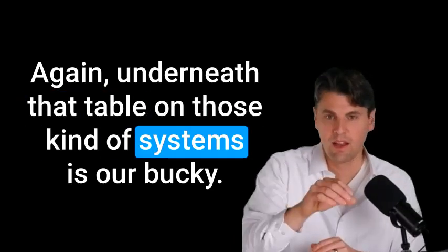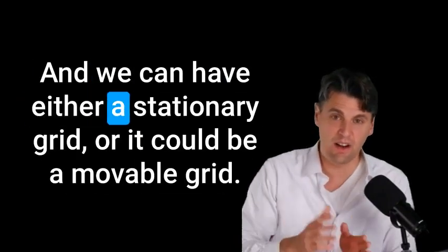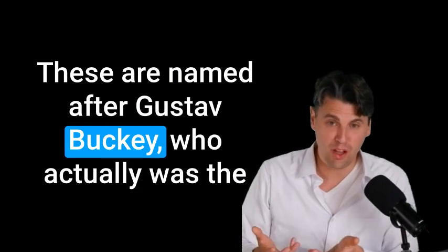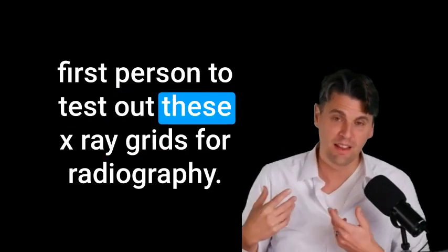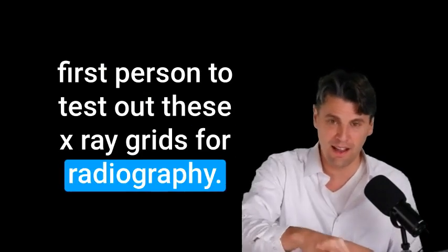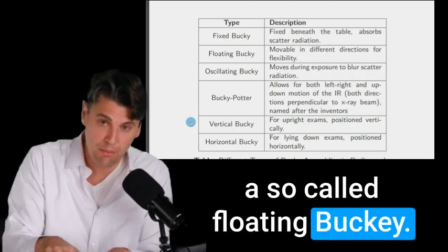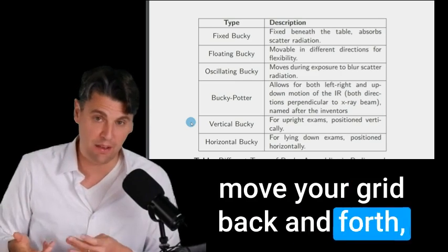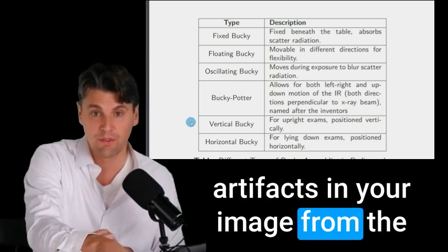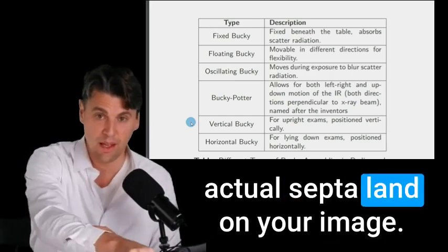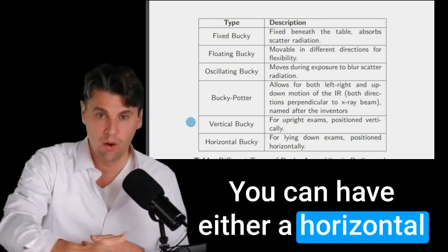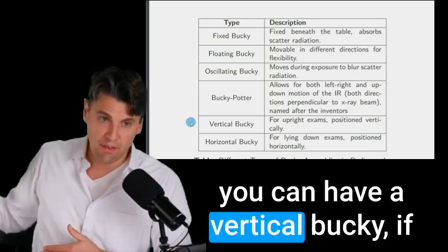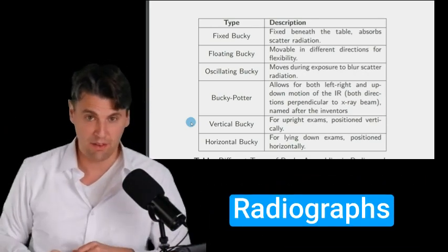Underneath that table on those of systems is our Bucky. And we can have either a stationary grid or it could be a movable grid. These are named after Gustav Bucky, who actually was the first person to test out these x-ray grids for radiography. You can have a fixed Bucky, a so-called floating Bucky, which you can move around, an oscillating Bucky, which is going to move your grid back and forth such that you don't have any artifacts in your image from the actual grid lines from where those actual septa land on your image. You can have either a horizontal Bucky if it's built into a table, we often call that a table Bucky, or you can have a vertical Bucky if you're going to be doing standing radiographs.